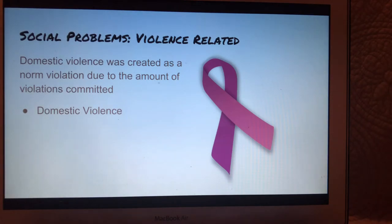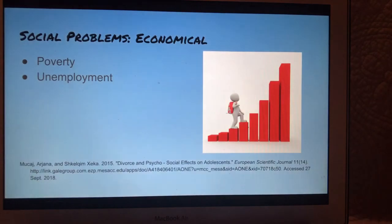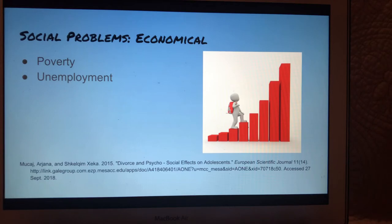Domestic violence was created as a norm violation due to the amount of violations committed. People see violence as a problem, and the alternate strategy to prevent more problems is laws. Economic social problems can consist of things like poverty and unemployment. Not only is this a norm violation, but it can also contribute to stressors one may have.